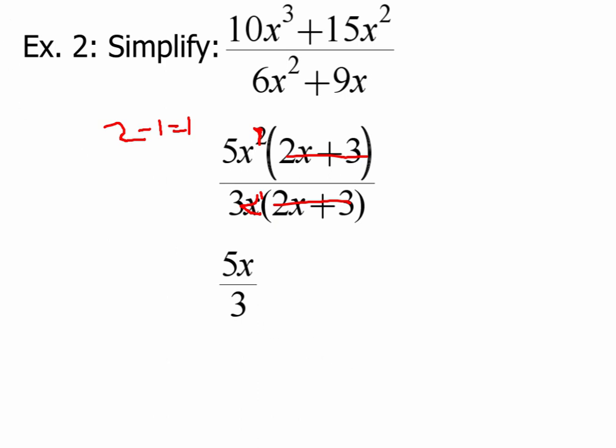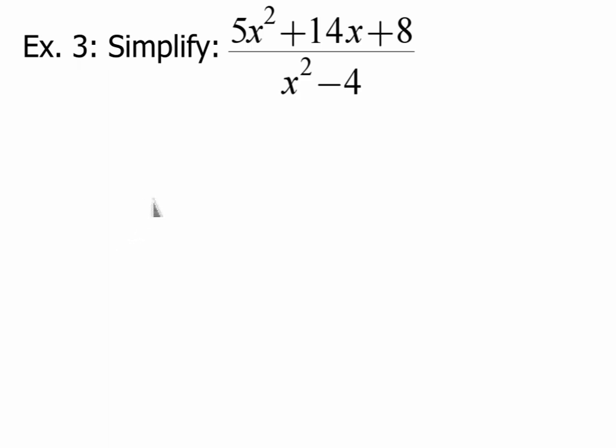And our final example that we're going to do, we want to simplify 5x squared plus 14x plus 8 over x squared minus 4. So for this one, we need to do some actual factoring. Okay, I'm not going to show all the work—we've done factoring in previous videos before. So 5x squared plus 14x plus 8. If I factor this, this factors out to be 5x plus 4 times x plus 2.